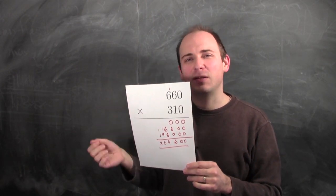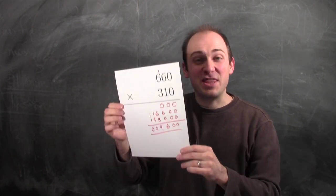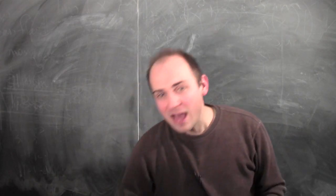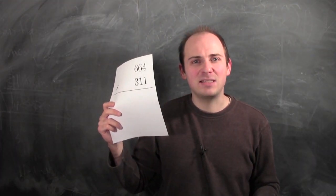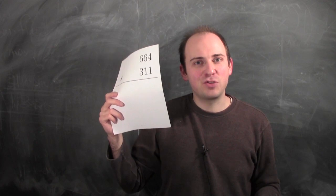But what if I perturb these inputs a little bit? Instead of assigning this multiplication exercise, I could have assigned 664 times 311.